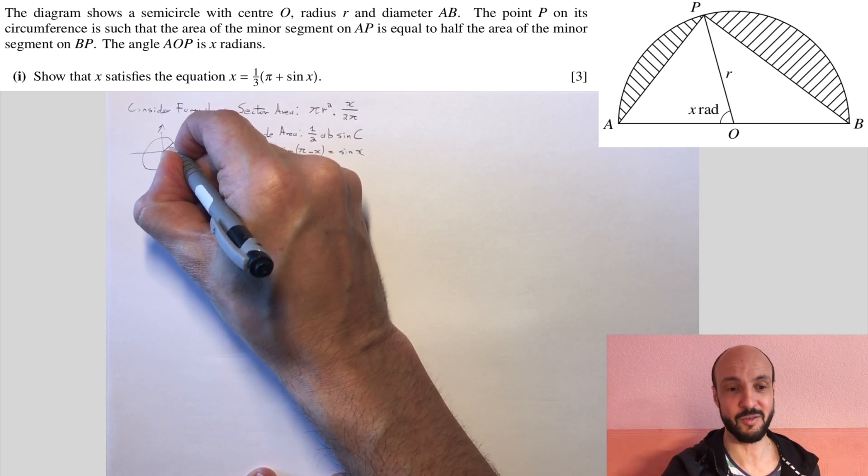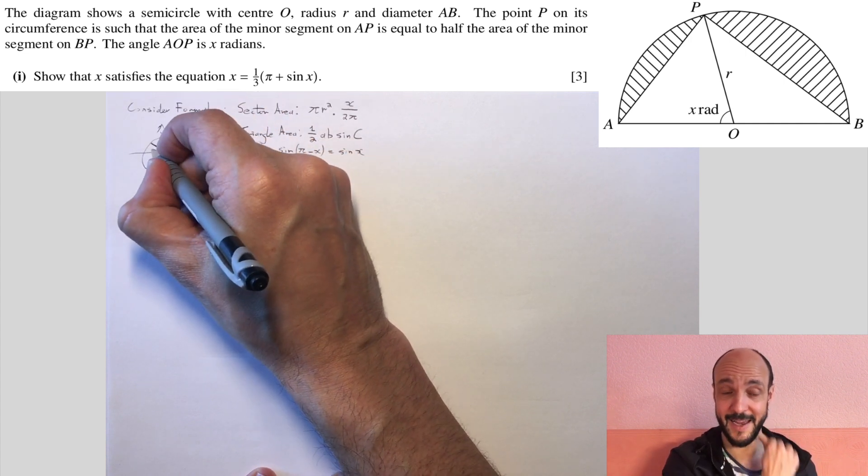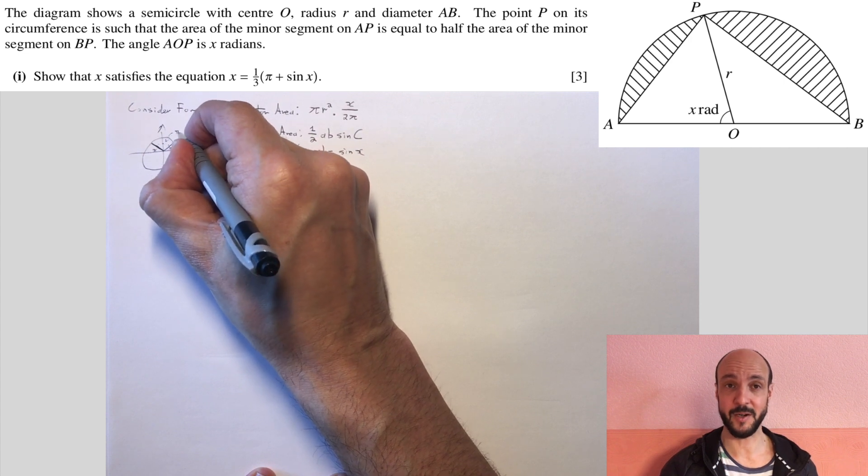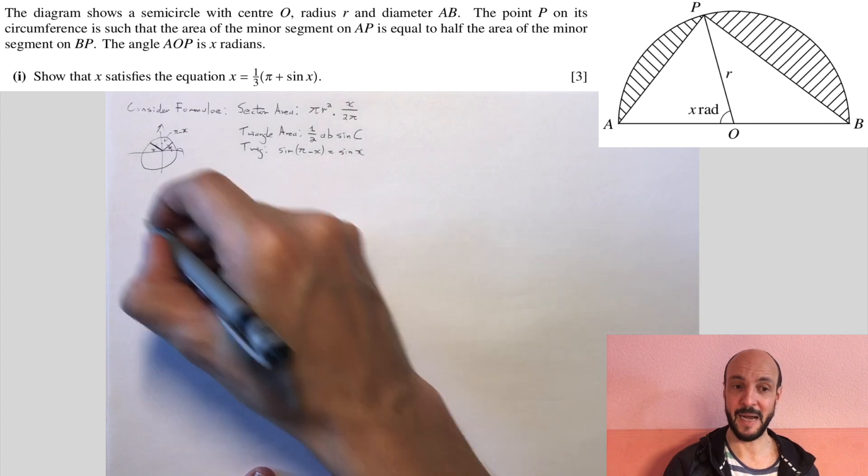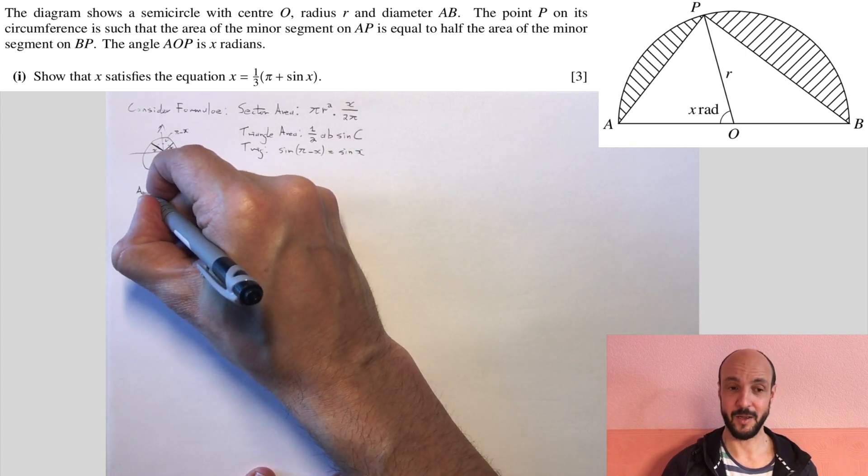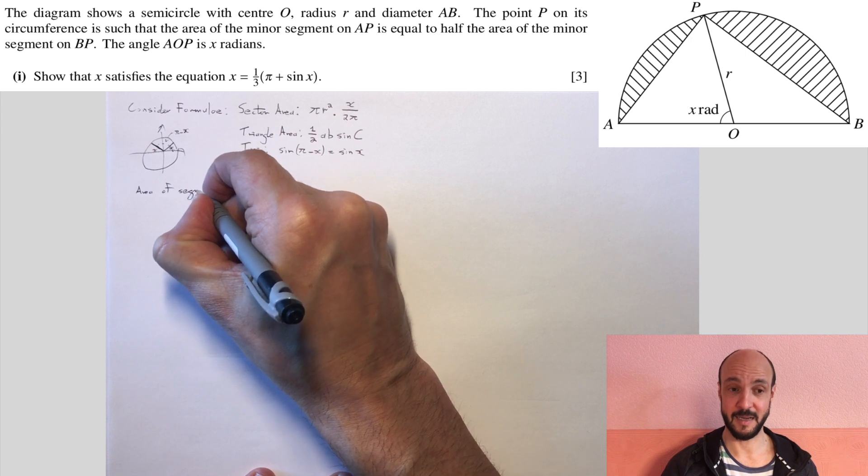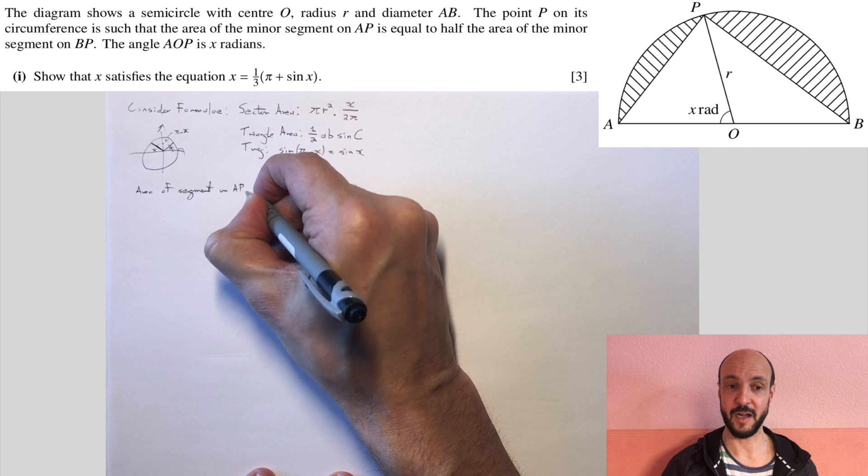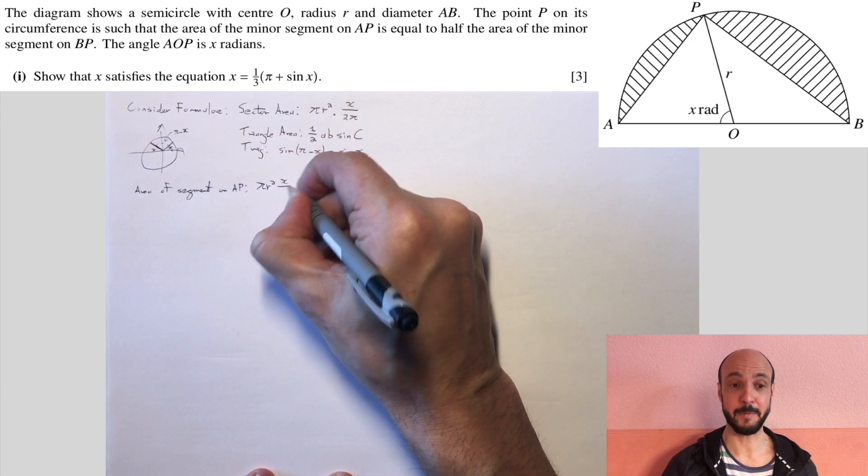So once we had these three identities, it was relatively straightforward to go on and compare the areas of the two segments. So the area of the segment on AP is the area of the sector on AP minus the area of the triangle on AP. So we've got pi r squared times by x over 2 pi minus a half r squared sine x.